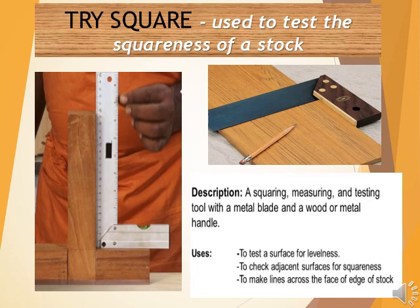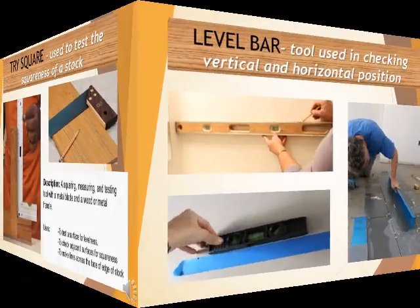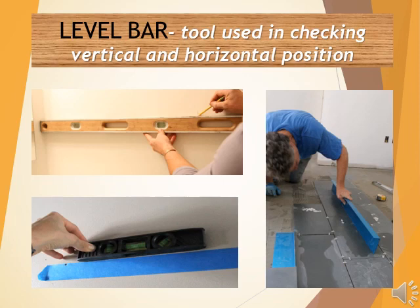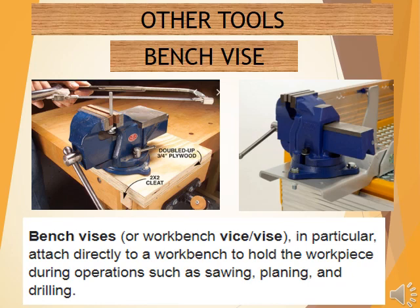The tri-square is used to test the squareness of a stock. It is a squaring, measuring, and testing tool with a metal blade and a wood or metal handle. The level bar is used in checking vertical and horizontal position. The bench vise attaches directly to a workbench to hold the workpiece during operations such as sawing, planing, and drilling.